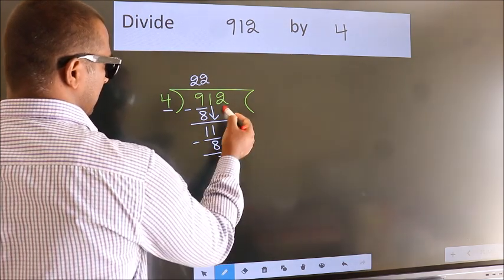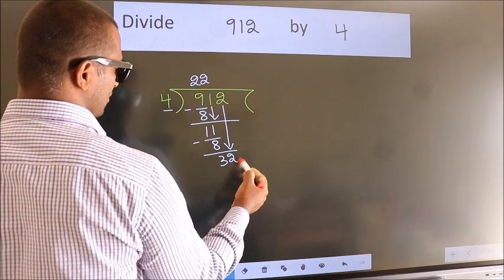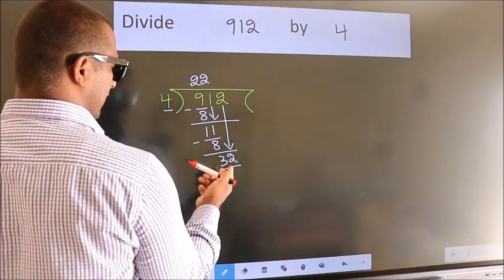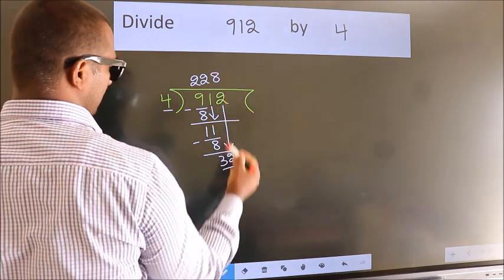After this, bring down the beside number. So, 2 down, 32. When do we get 32? In the 4 table, 4 8s, 32.